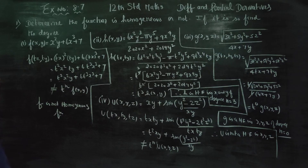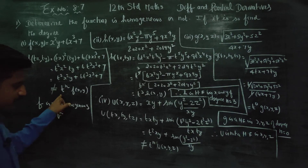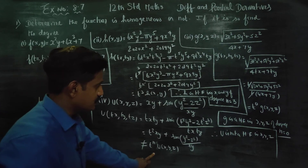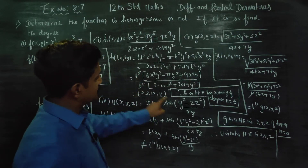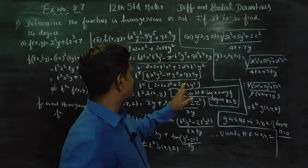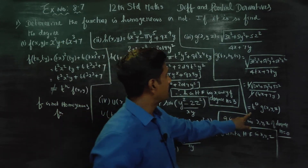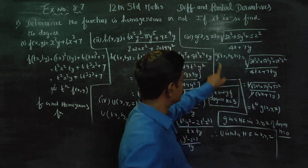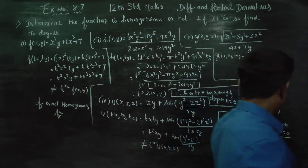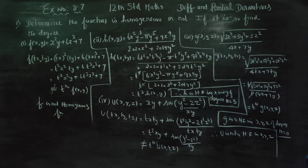This is not homogeneous — u is not homogeneous. H is homogeneous of degree n equal to 3. And the last subdivision: G is homogeneous of degree n equal to 0. This is the homogeneous test. Thank you.